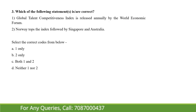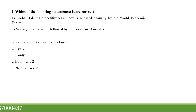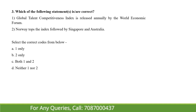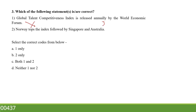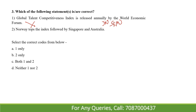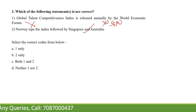Next: which of the following statements is or are correct? First, the Global Talent Competitiveness Index is released annually by the World Economic Forum. Second, Norway tops the index followed by Singapore and Australia. Both options are wrong. The Global Talent Competitiveness Index is not released by the World Economic Forum; it is released by INSEAD business school. And it is not topped by Norway — Switzerland tops it, followed by the United States and Singapore. So neither one nor two is correct.